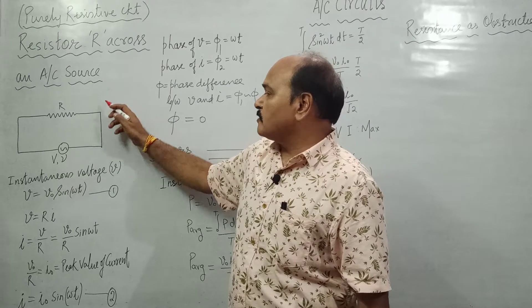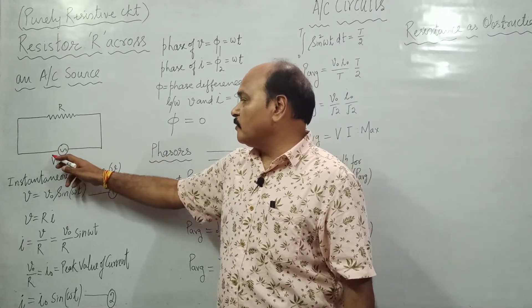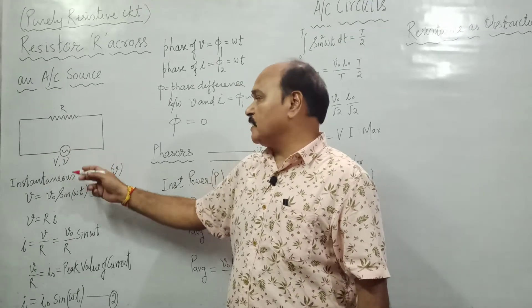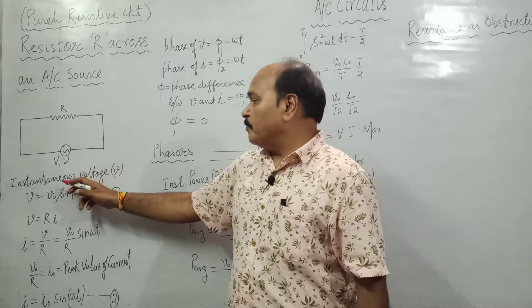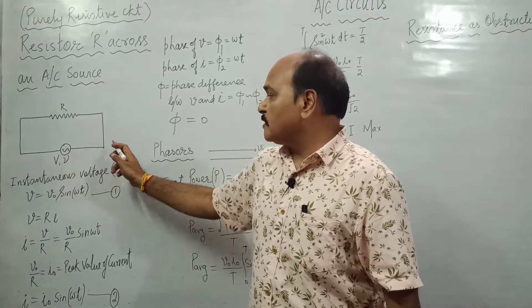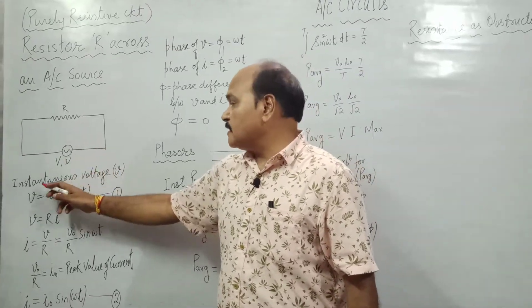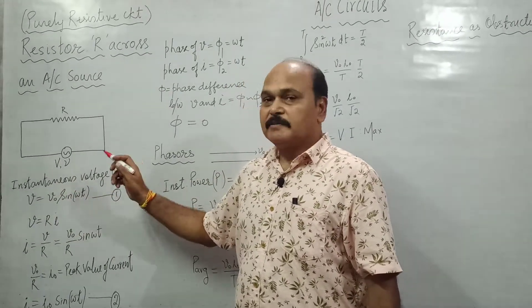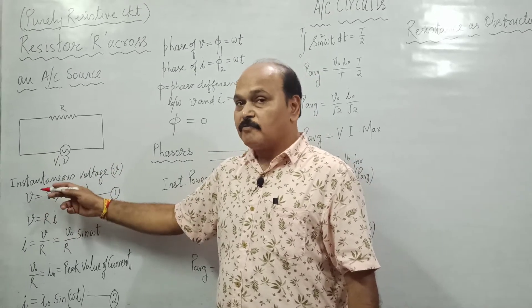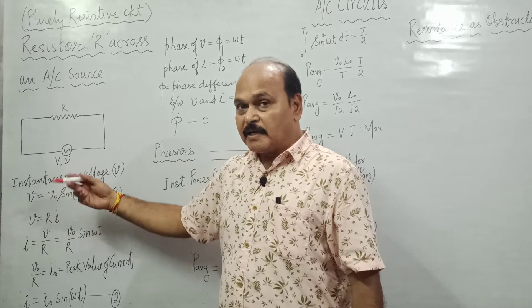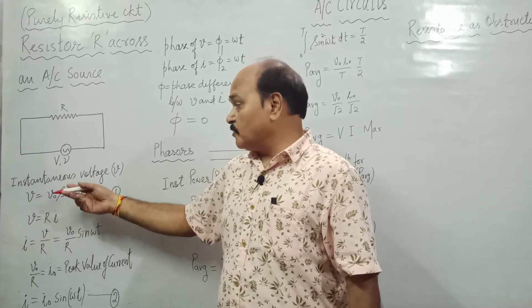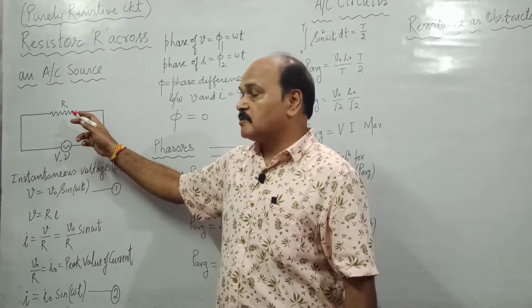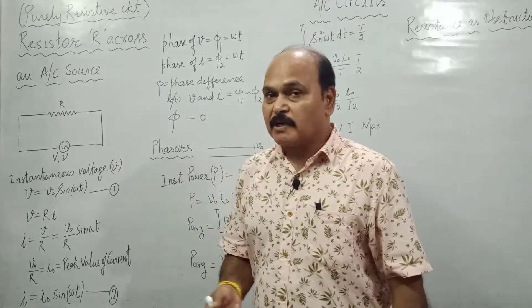When we connect a resistance across an AC source whose RMS value is capital V and nu is the frequency of the alternating source, the potential difference across the terminals of this alternating source has instantaneous value V = V₀ sin(ωt). The potential difference V connected across resistance is always equal to Ri.